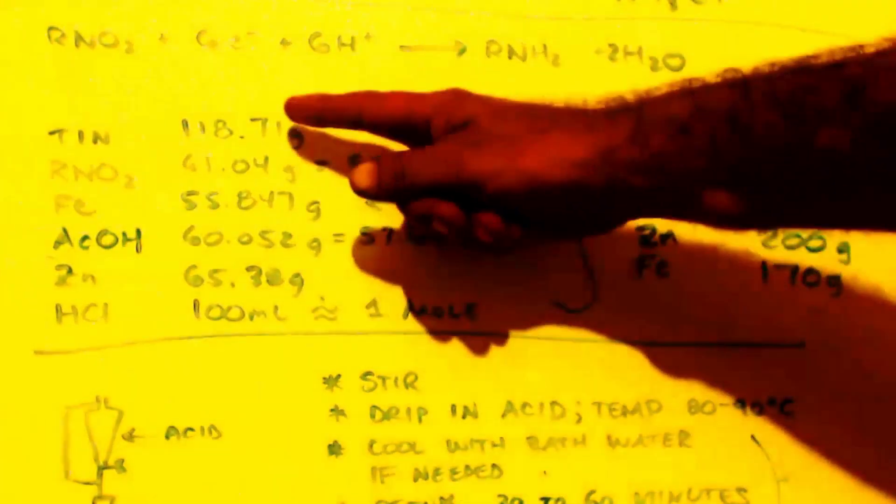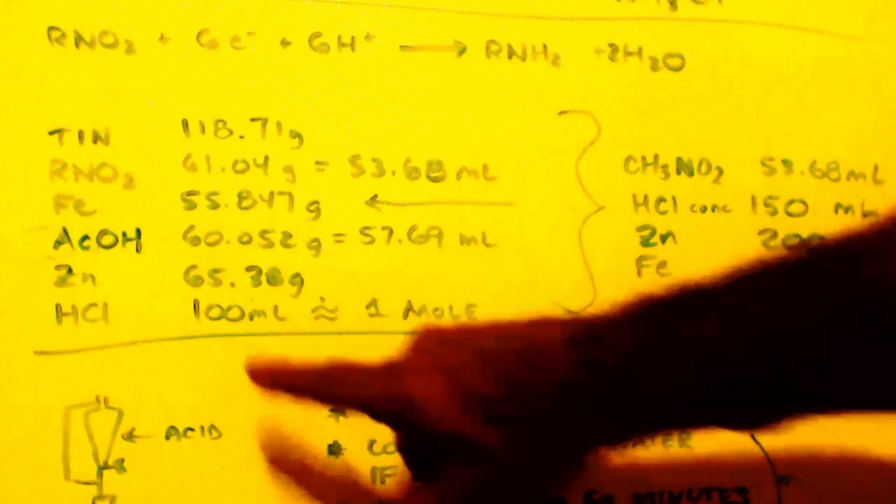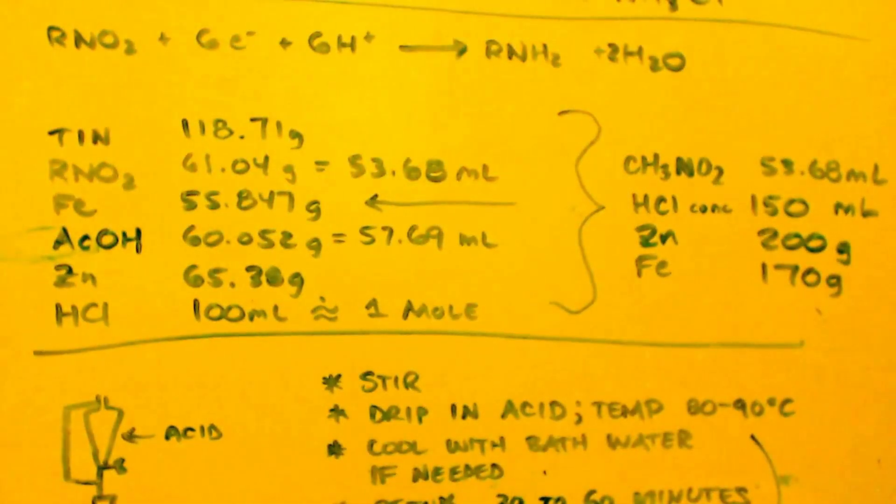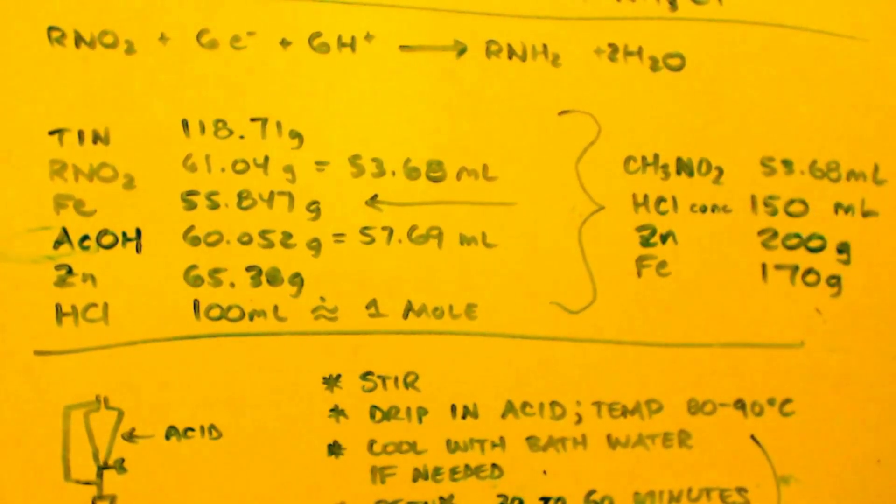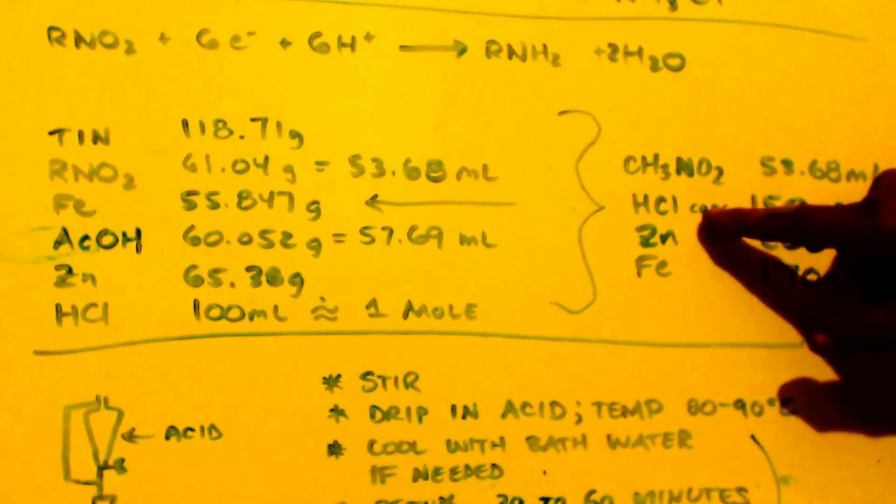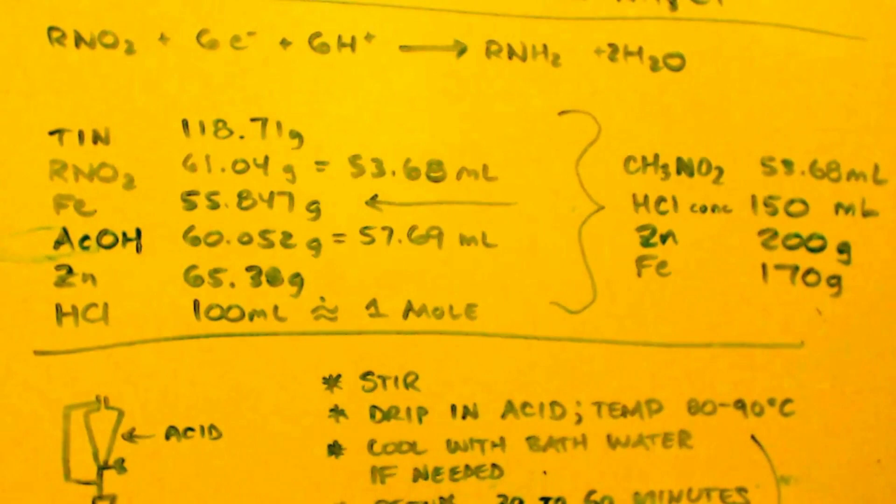These are molar amounts, by the way, over here, folks. Now, in my example, I'm going to use one mole of nitromethane, which is 53.68 milliliters. I'm going to use concentrated hydrochloric acid or whatever they have at the hardware store, which is usually 32, 32.5%. And that's usually about 100 milliliters, like a mole, maybe a mole and slightly more than a mole, but it's close to a mole.